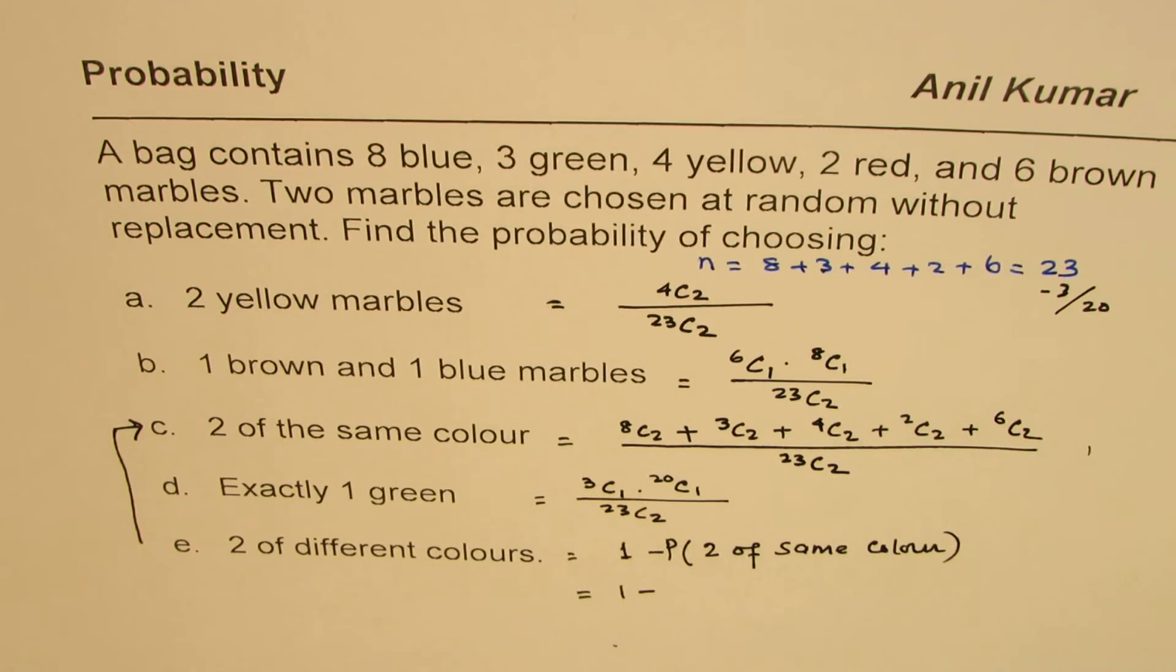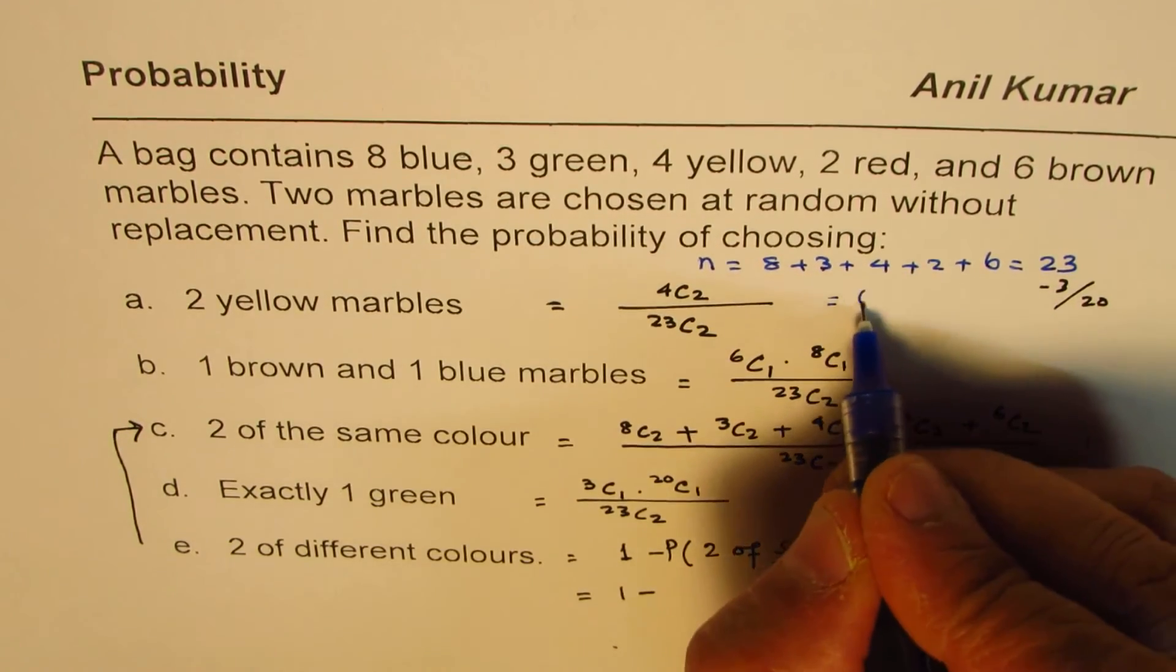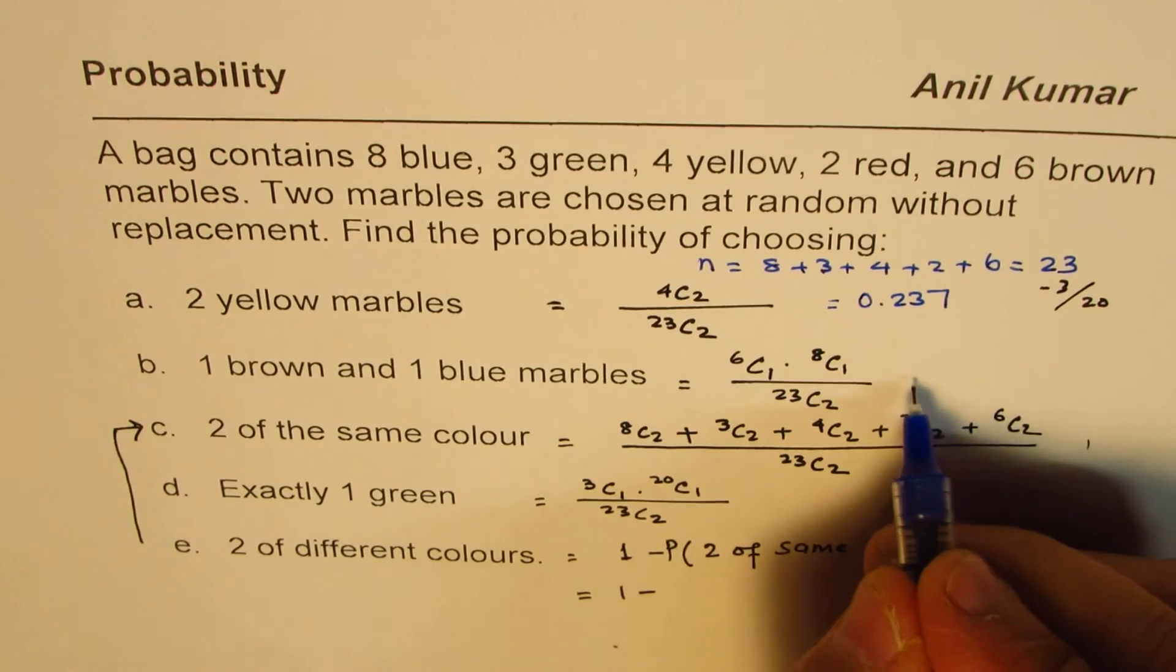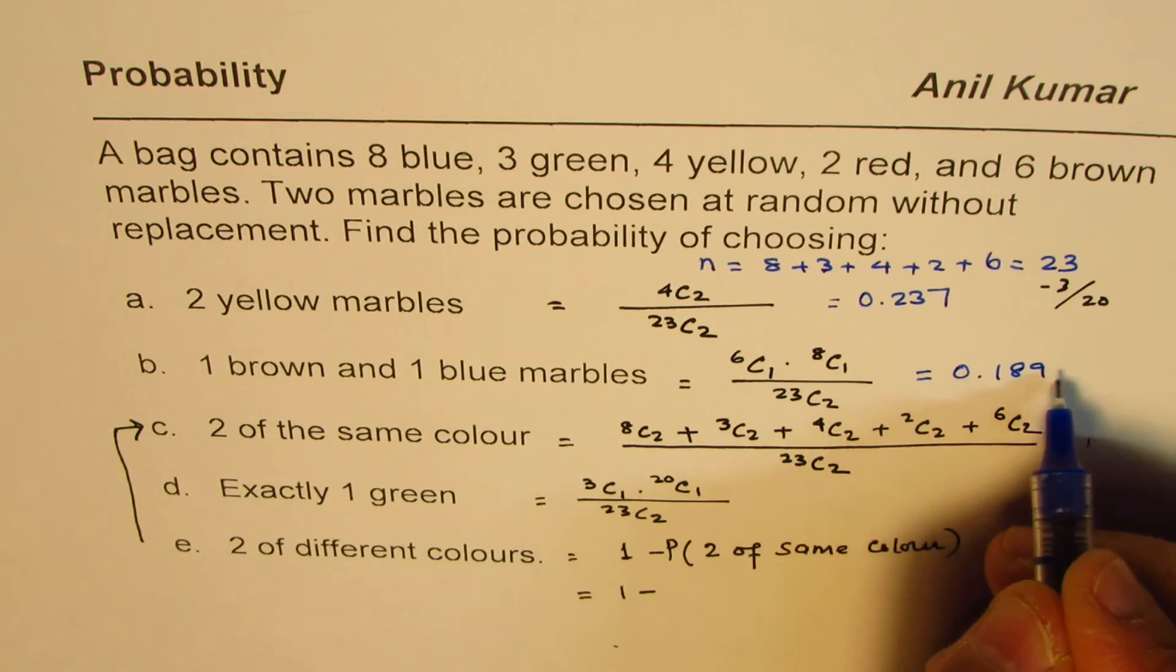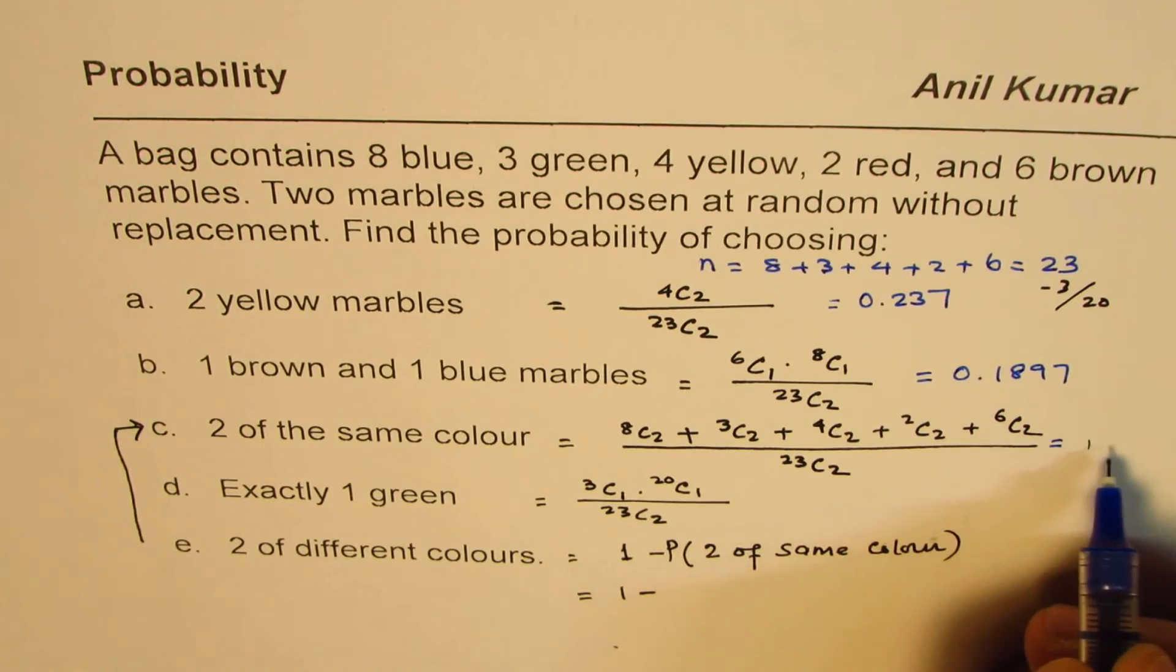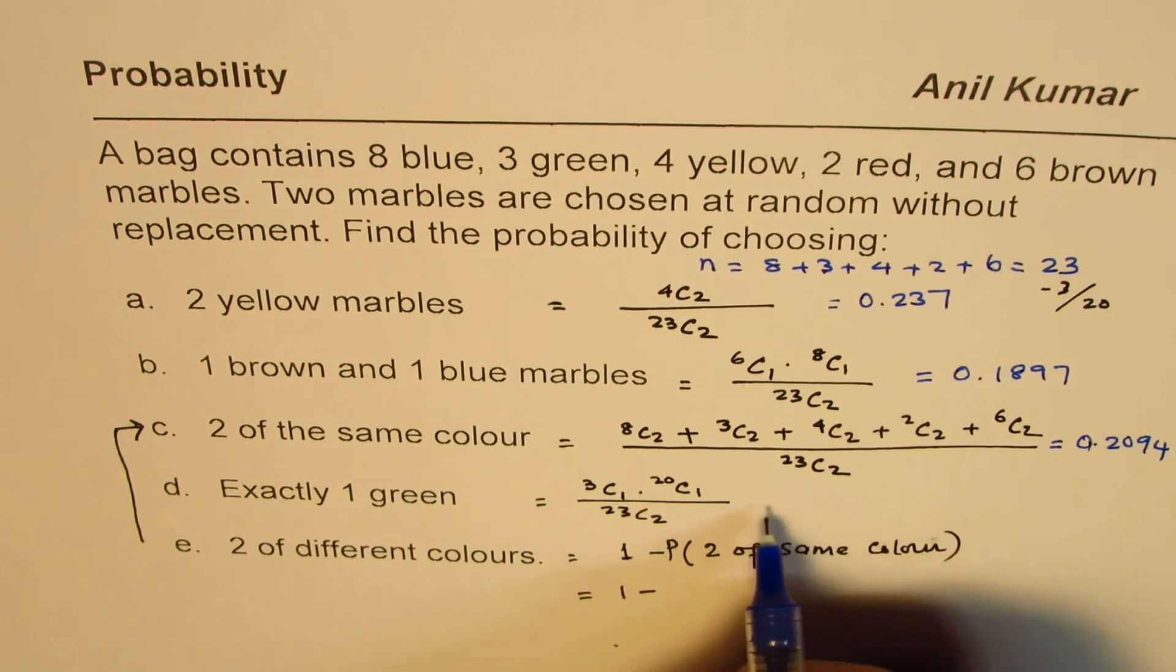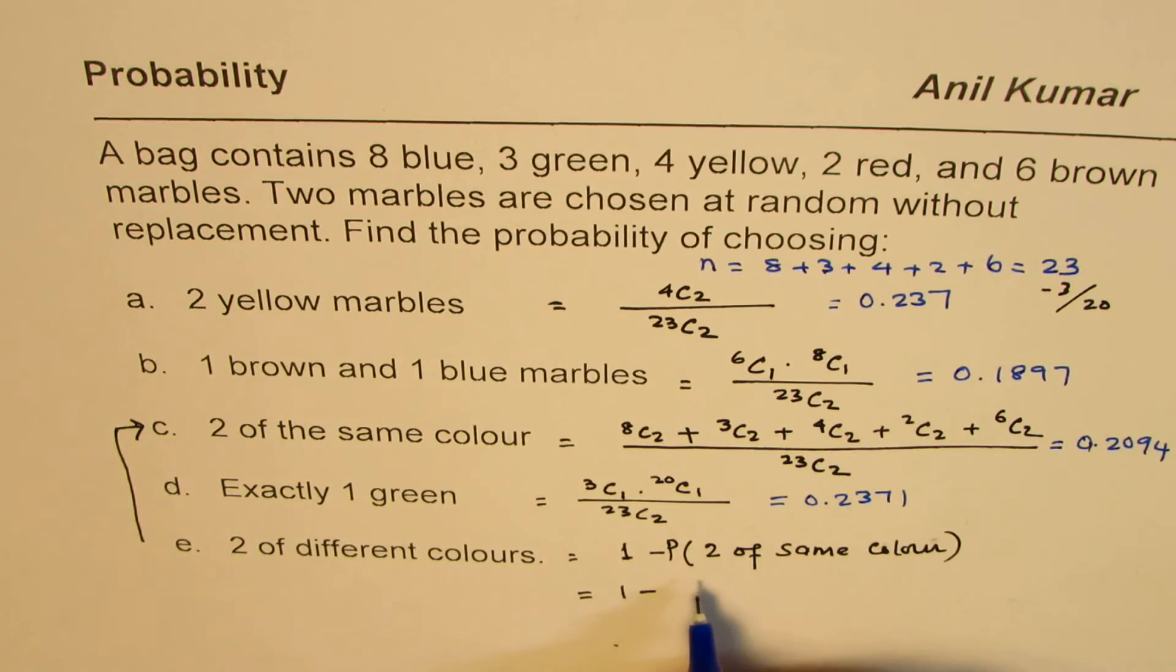So when you calculate these, I'll give you the answers here. You can check with the calculations. It is 0.237. And this one is equals to 0.1897. And this one, C, all these combinations is 0.2094. And here, exactly one green is 0.2371.